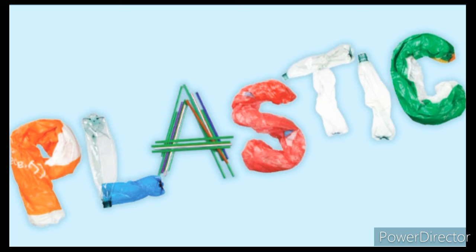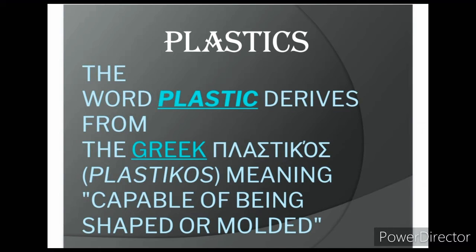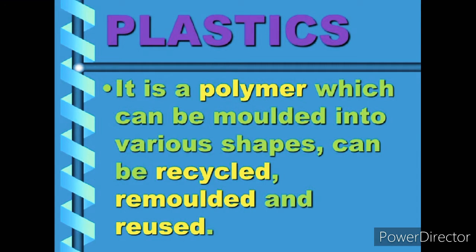Plastics are said to be the most versatile materials on the earth. We know almost all the products we use in our daily lives contain plastics. The word plastic is derived from the Greek word plastikos, meaning capable of being shaped or molded. A plastic is a synthetic material which can be molded or set into a desired shape when soft and then hardened to produce a durable article.